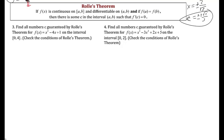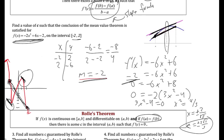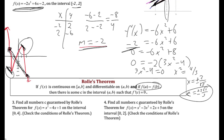Rolle's theorem says: if f is continuous on [a, b] and differentiable on the open interval (a, b), and if f(a) equals f(b), then there's some value c where the derivative equals zero. If there's no rise then the slope is 0, meaning the mean value theorem slope formula gives 0. So there must be some value of c with an instantaneous slope of 0.